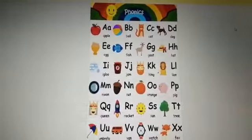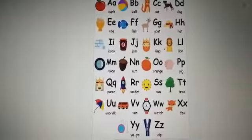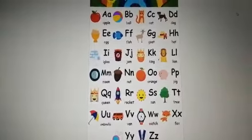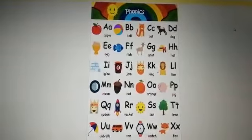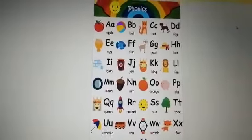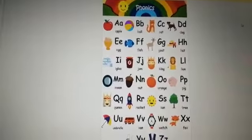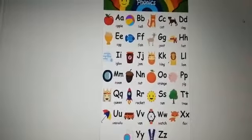J for jam, sound J. K for king, sound K. L for lion, sound L. M for moon, sound M. N for nut, sound N. O for orange, sound O. P for peacock, sound P.